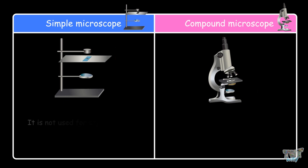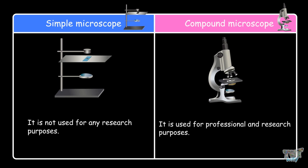The simple microscope is not used for any research, whereas the compound microscope is used for professional and research purposes.